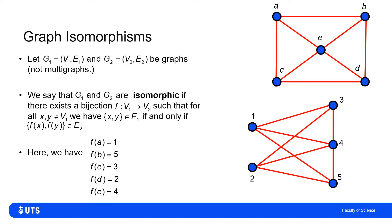So if I think and I define the function F to be a mapping that maps node A to node 1, node B to node 5, node C to node 3, D to 2, and E to 4.